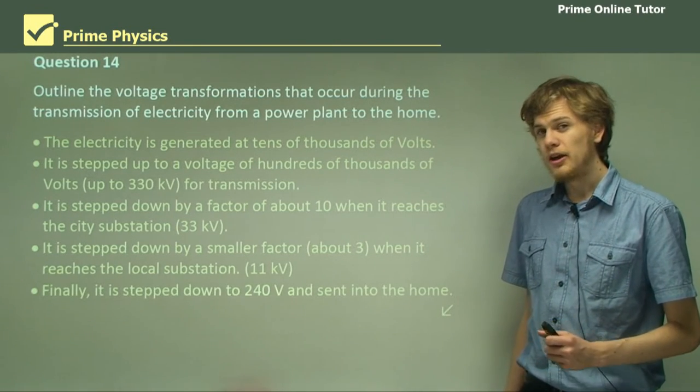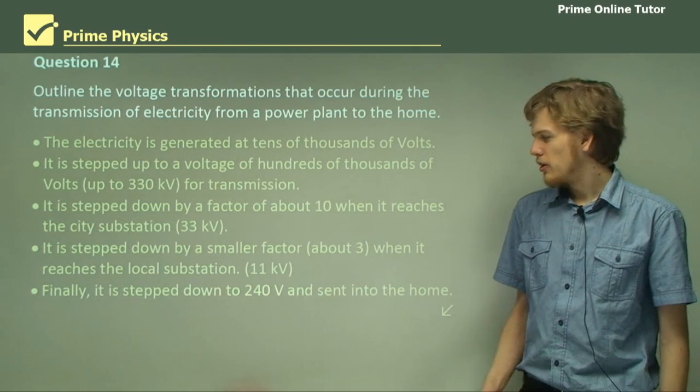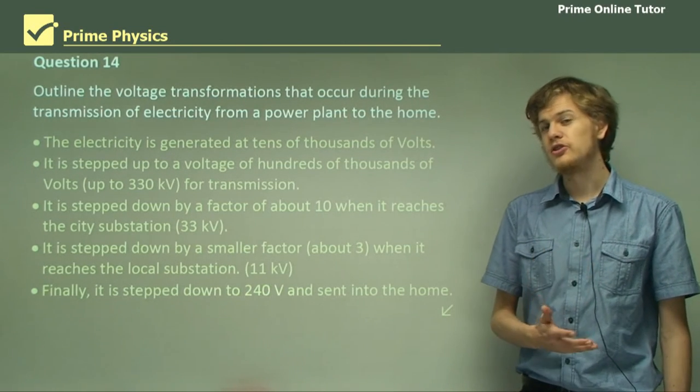Finally, it's stepped down at a pole transformer, or a distribution transformer, to 240 volts, and this is when it's sent into the house.